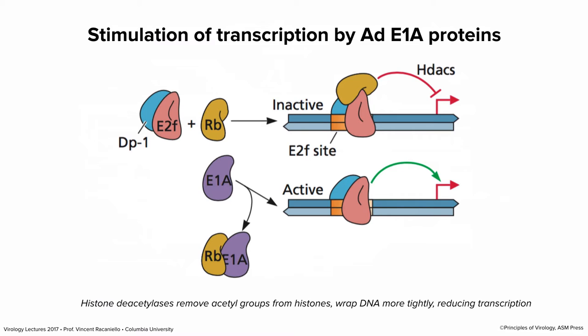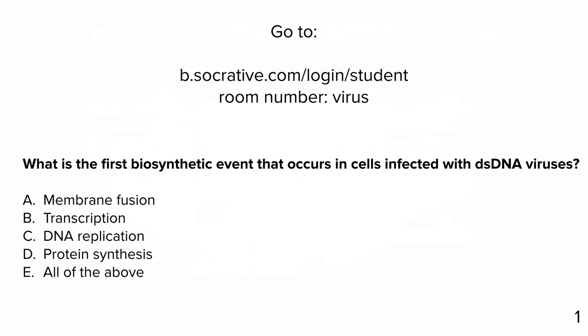This is important for a number of reasons. It shows how the virus must make E1A before it can do anything else, because it needs free E2F. Remember E2F, E1A, and RB — this will come back when we talk about cell growth control and viruses causing cancer.